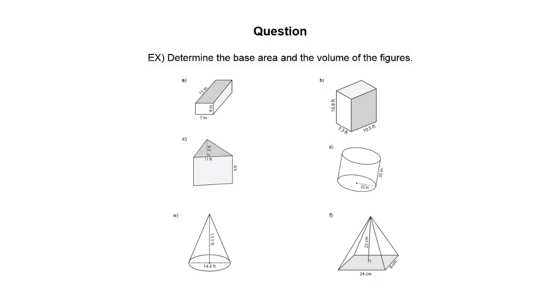In this question, we are given six different shapes, and each of the shapes have bases. We need to figure out the area of each of the bases, and then we're going to use that area to find the volume.